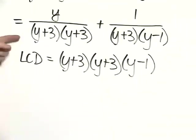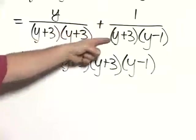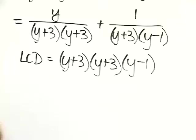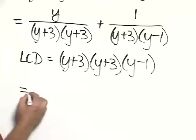Our next step is to write equivalent rational expressions for each of these, but that now have the LCD as the denominator. So, what we would have then is,